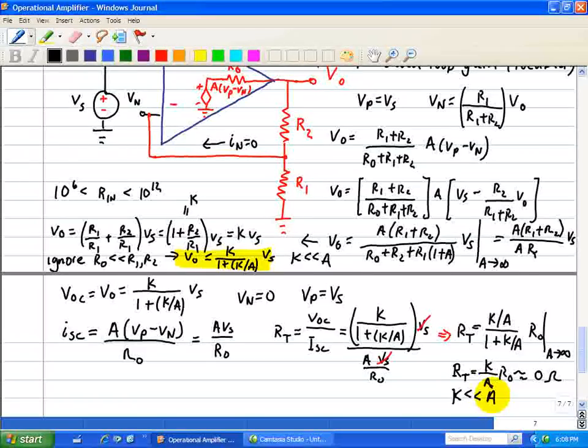We also discovered that the Thevenin output resistance at the output of the op-amp circuit with feedback is essentially zero.